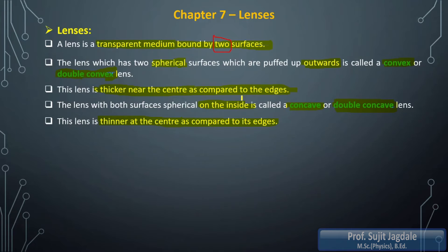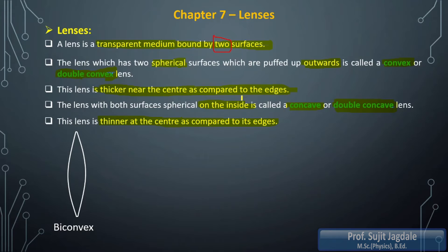These are the two types of lenses we are going to consider to study refraction of light. Now, depending on which type of surfaces we are combining, lenses are divided into certain categories. The first category is the bi-convex lens. Here 'bi' means two, and both surfaces are convex, so it is referred as a bi-convex lens.